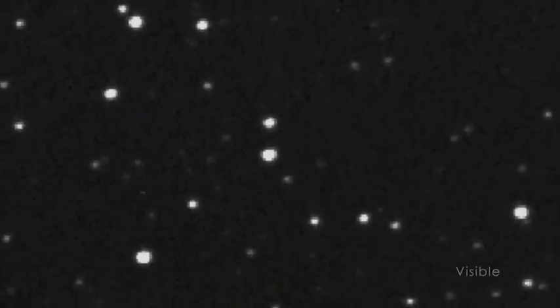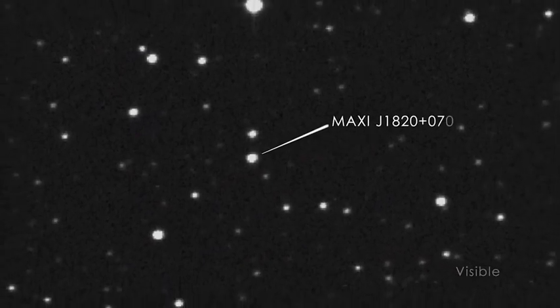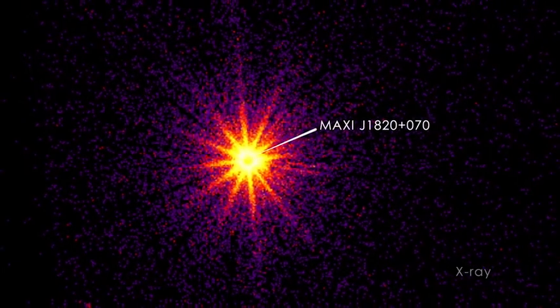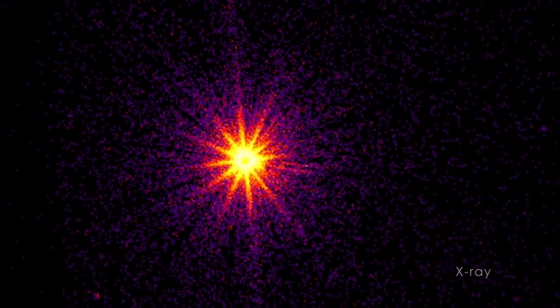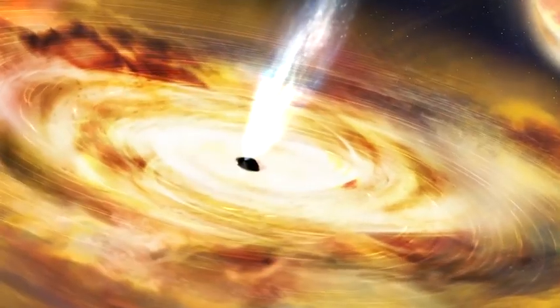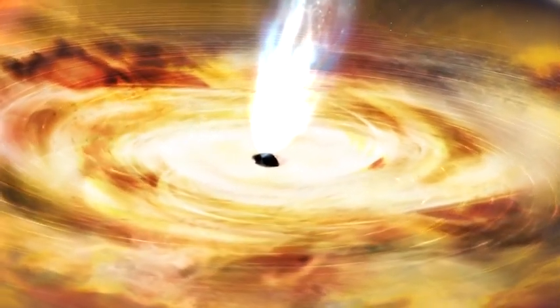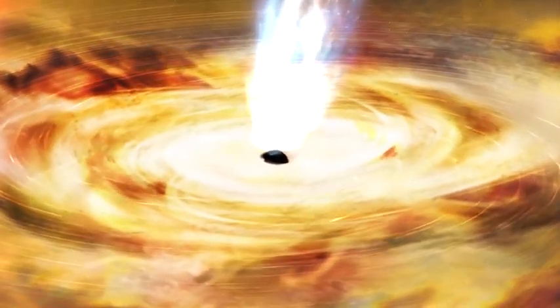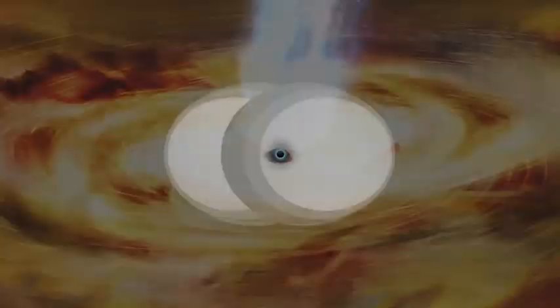NICER let us watch a flare of light from the area around a black hole called Maxi J1820 plus 070, or J1820 for short. This stellar mass black hole is around 10 times the sun's mass and funnels gas away from a neighboring star and into a dense ring of material called an accretion disk.